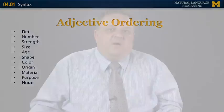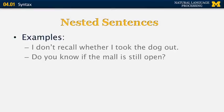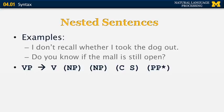Now let's look at nested sentences. Birds fly versus I believe that birds fly — in the second example, birds fly is nested inside the larger sentence. More examples: I don't recall whether I took the dog out. Do you know if the mall is still open? In the first sentence, the embedded sentence is I took the dog out. To accommodate nested sentences, we need to revise our grammar.